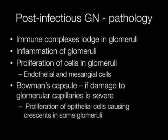In post-infectious glomerulonephritis, immune complexes lodge in the glomeruli. This results in inflammation of the glomeruli with proliferation of endothelial and mesangial cells. If damage to the glomerular capillaries causes blood to leak into Bowman's space, this can result in proliferation of the epithelial cells of Bowman's capsule causing crescents to form.